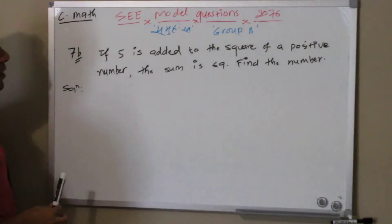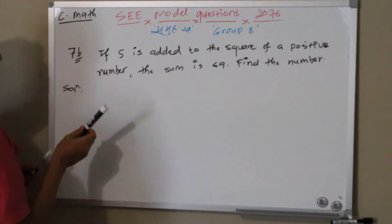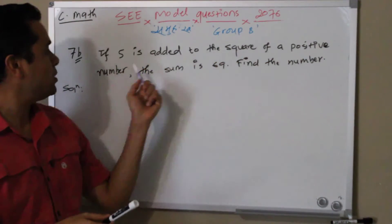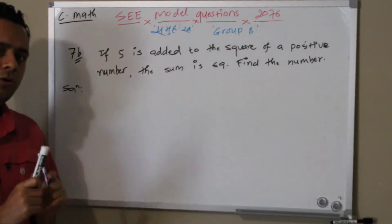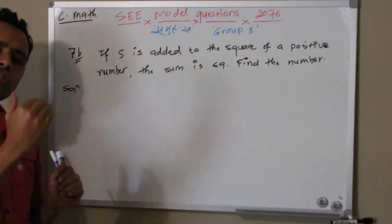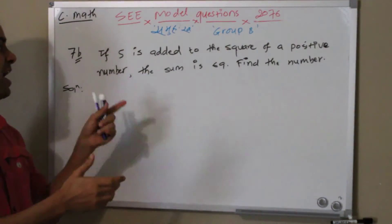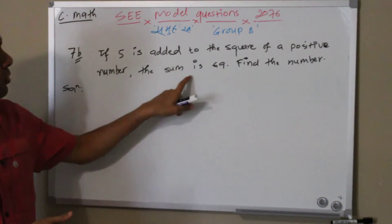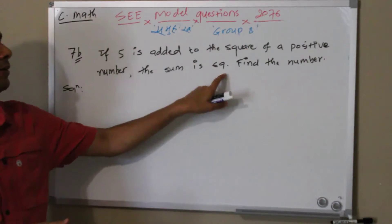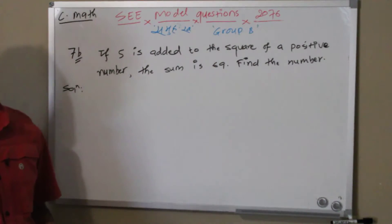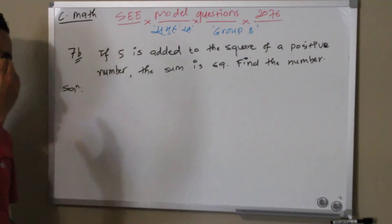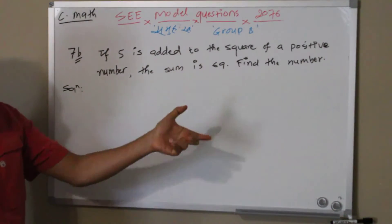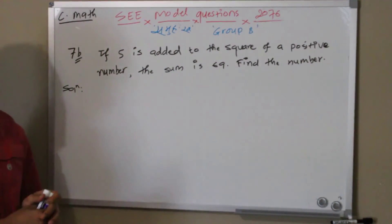Now question number 7b. The question says: if 5 is added to the square of a positive number, the total sum would be 69. We don't know that number, but if you square that number and add 5 on it, the total sum would be 69. So we have to find that number.